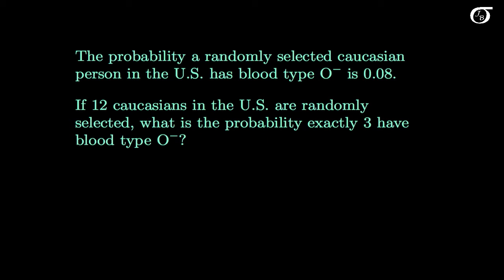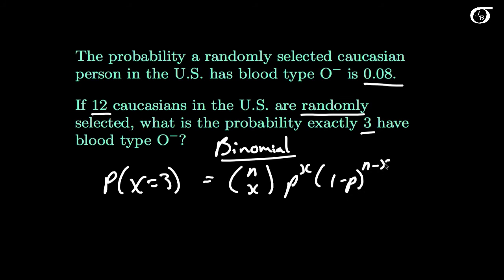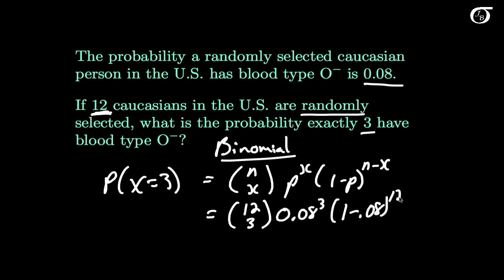The probability a randomly selected Caucasian person in the US has blood type O negative is 0.08. If 12 Caucasians are randomly selected, what is the probability exactly 3 have blood type O negative? We are counting occurrences in 12 independent trials each with the same probability, so the binomial distribution applies. We want P(X=3), using n choose x times p to the x times (1-p) to the n-x: 12 choose 3 times 0.08 cubed times 0.92 to the ninth power. This works out to 0.0532.